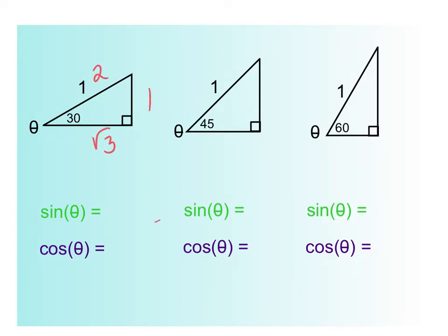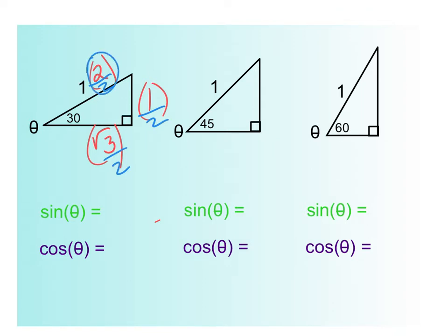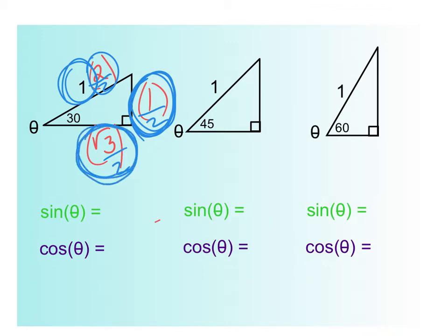But what if you wanted the hypotenuse to be one? Well, isn't that half as big? This is what you're used to — the red numbers. So if the hypotenuse had to be one, you divide everything by two. Two divided by two gives you the one you wanted, and then this side would be a half. This side would be root three over two — I just took my normal dimensions and divided them all by two.